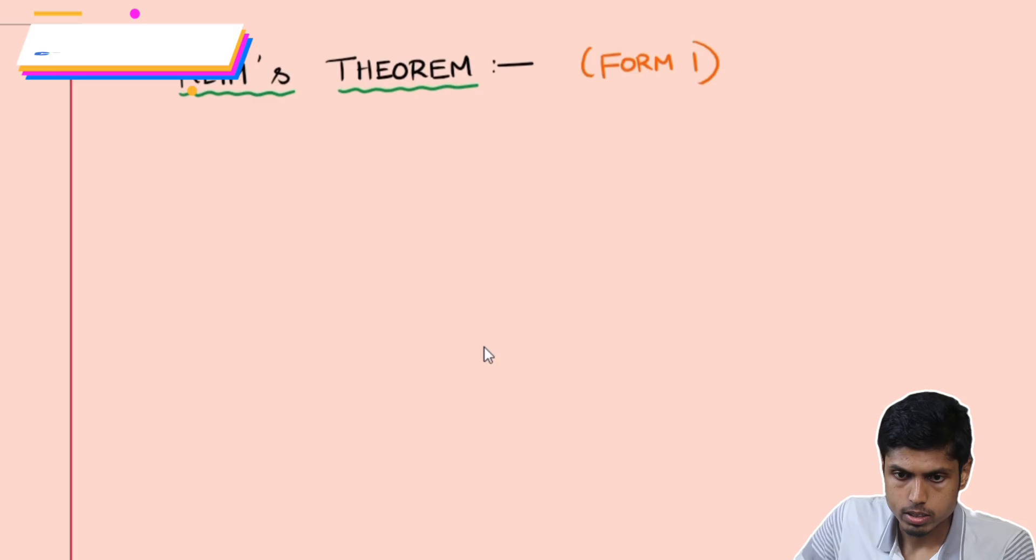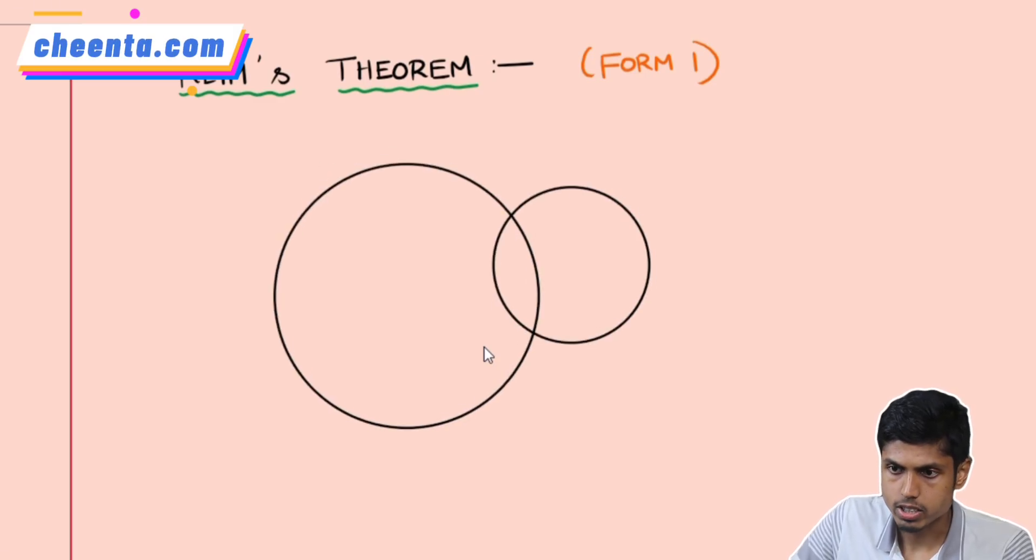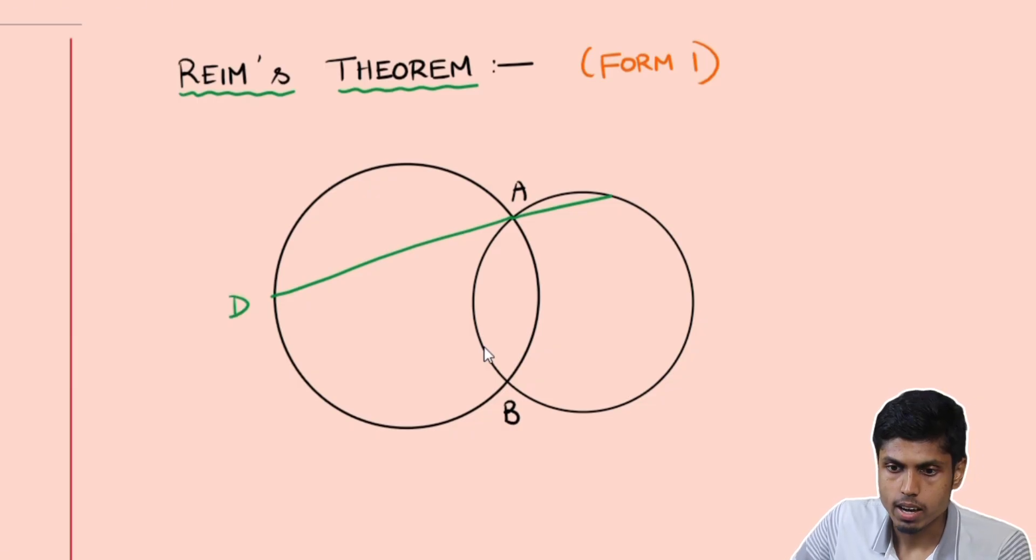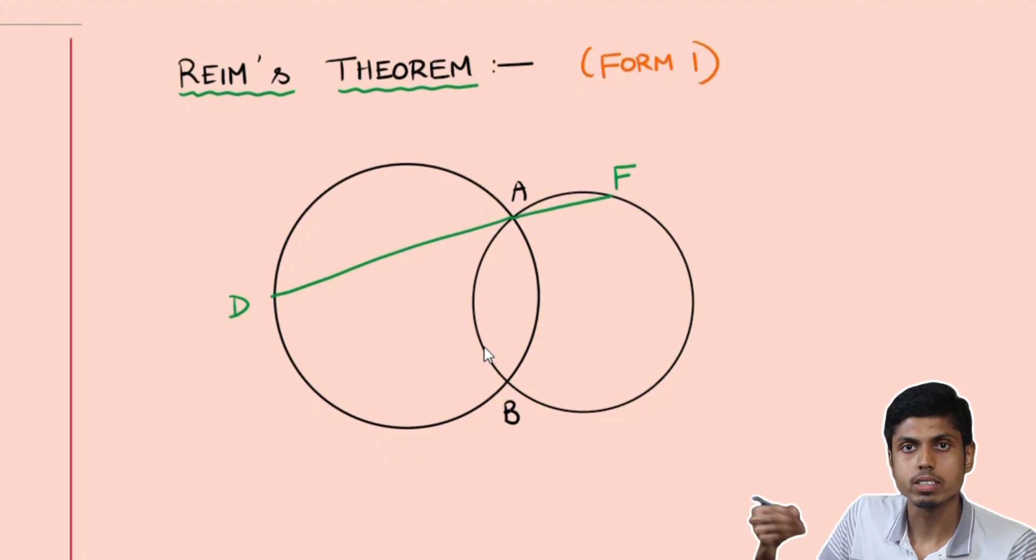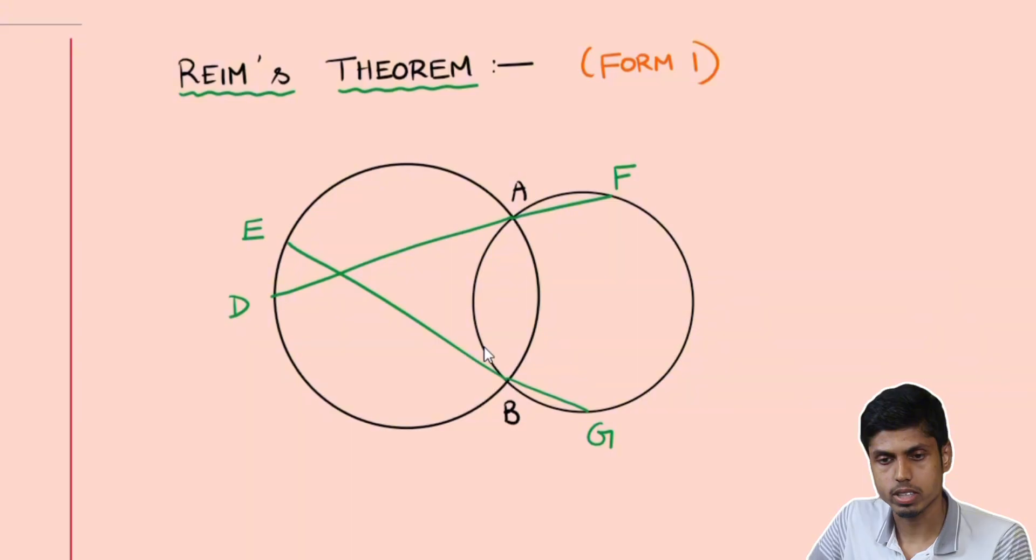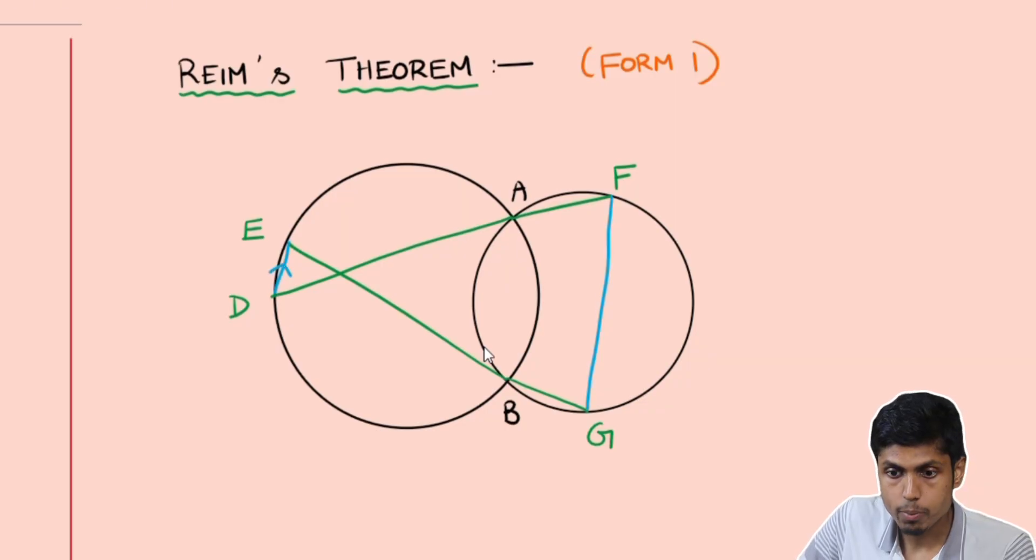Suppose I consider two circles that intersect each other at points A and B, and then I consider collinear points D, A and F such that D lies on the first circle, F lies on the second circle. And then I consider three collinear points E, B and G such that E lies on the first circle and G lies on the second circle. Then it turns out the lines DE and FG are parallel.